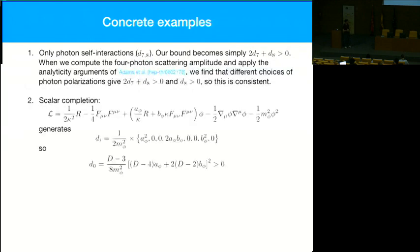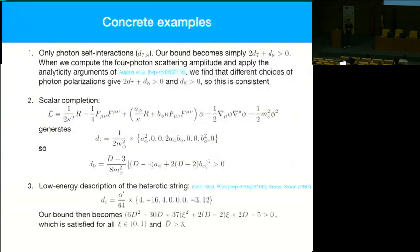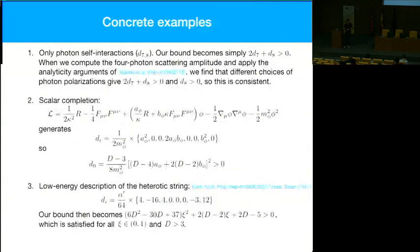Another check is a scalar UV completion with arbitrary couplings a_phi and b_phi. We can compute the d_i's explicitly, and the bound d_0 > 0 just becomes a perfect square — manifestly satisfied. Finally, for the heterotic string compactified down to d dimensions on a torus, we can read off the d_i's, and our bound becomes the requirement that a certain combination of d and ψ be positive. That combination is positive for all ψ and all d, so our bound is manifestly satisfied in the heterotic string.